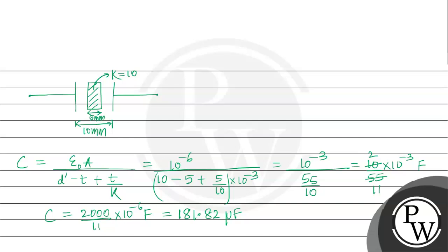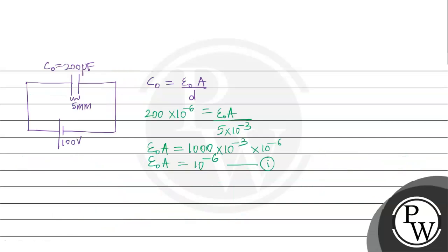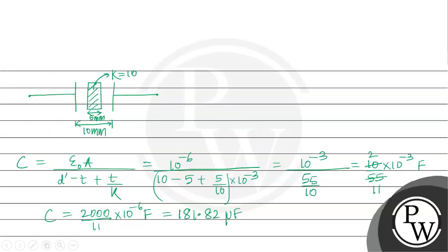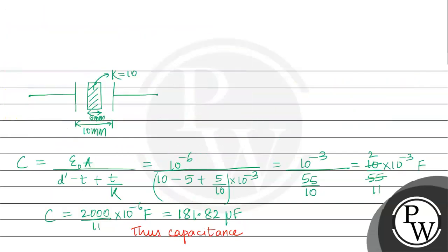Now let's look at the reason for how the capacitance changes. The capacitance of the capacitor decreases from 200µF to approximately 181.82µF.